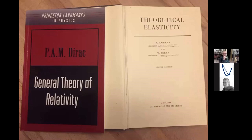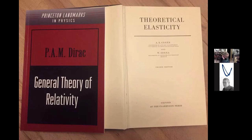One of the questions that people ask me is, what should I know about the theory of shell structures, for example? And what I always do is I refer them to this book, Theoretical Elasticity by Greene and Zerner. Now, the problem with Greene and Zerner, or shell books in general, is that they are quite heavy going, although Greene and Zerner's not as bad as some.